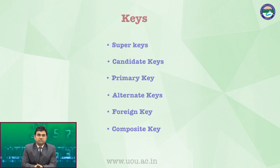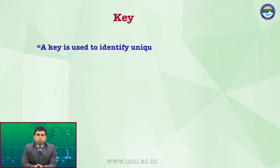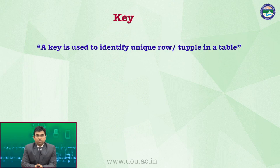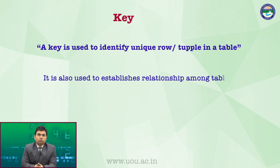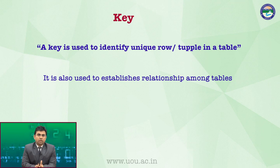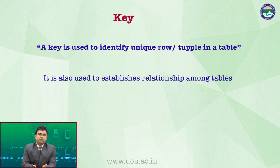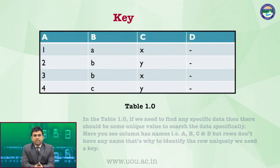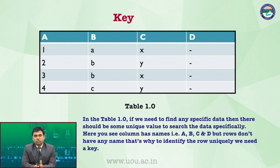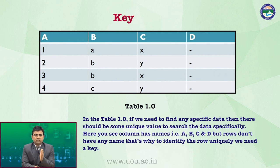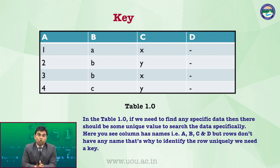पहले आपको जानकारी देंगे हम Keys के बारे में। पूरा एक रिकॉर्ड आपके सामने रखता है, उसमें रिकॉर्ड में कॉलम एक भी हो सकता और एक से जादा भी हो सकते हैं। यहाँ पर मैंने एक example लिया है, यहाँ पर जो column है वो आपके चार हैं, और rows भी हमने चार लिए हैं। Column name is A, B, C, D which is in blue color. After that, we have done a data feed column-wise. Record is total 4 — we can say that there are 4 tuples and 4 rows in this table.